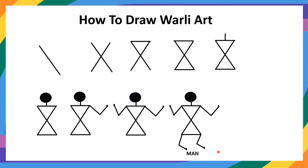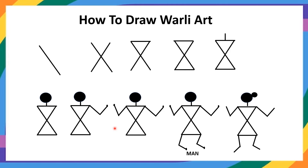Now this is a man. If you want to draw a woman, just observe here — on the head, give a bun, a knot, so you can differentiate between a man and a woman. Hope it's very easy for you to draw.